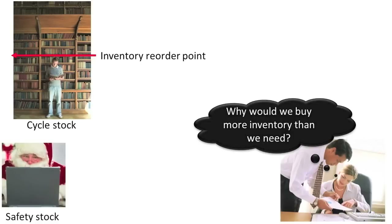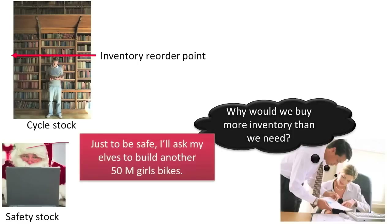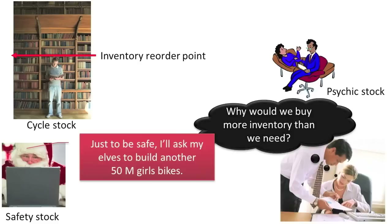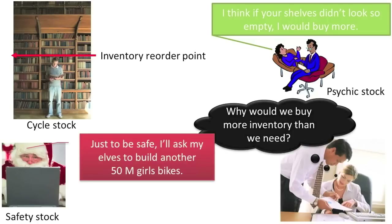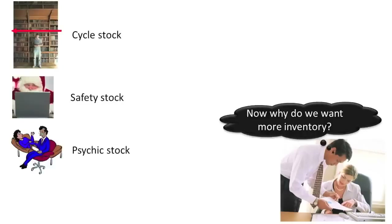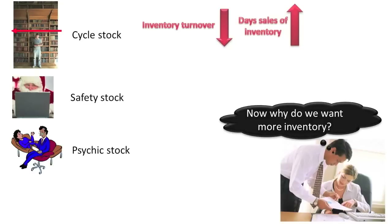Safety stock: management purchases additional inventory during key selling seasons to handle seasonal demand, such as for the Christmas shopping season. Psychic stock: management purchases additional inventory to ensure store shelves are always totally full, giving customers the feeling that the company has more than enough to meet their needs — stores that look empty tend to drive customers away. All three of these reasons will tend to reduce the number of times a company turns its inventory over, increase days' sales of inventory, and result in increased inventory carrying costs.